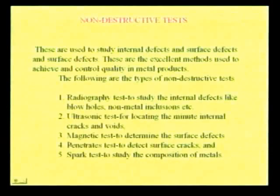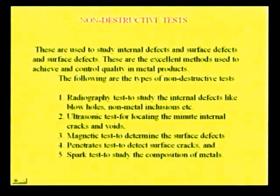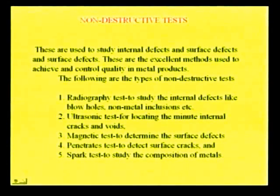We have now discussed various destructive tests; let us move to non-destructive tests. In destructive tests, we cause damage to the work pieces. But in non-destructive tests, we do not damage the work piece — we find internal defects such as cracks, blow holes, and voids. Non-destructive tests are important but not economical for ordinary operators. In non-destructive tests, we use different resources such as X-rays, ultrasonic sound waves, magnetic waves, red dye methods, and spark methods. The following are the types of non-destructive tests.